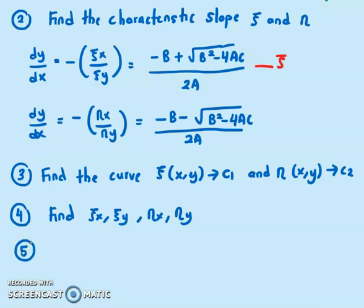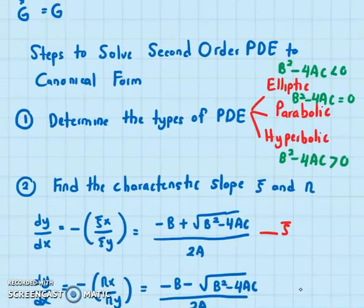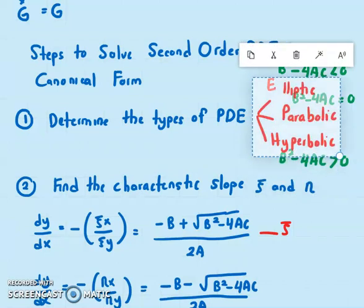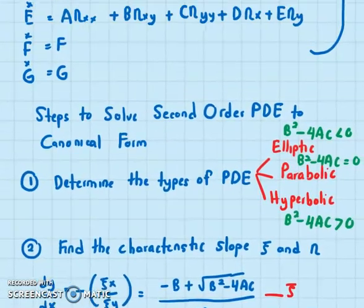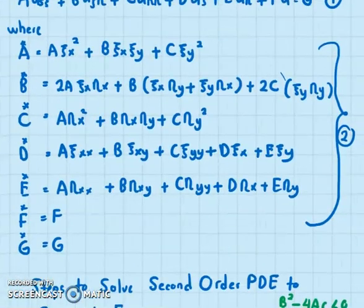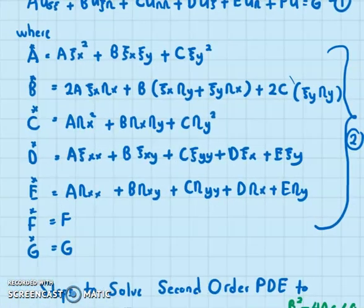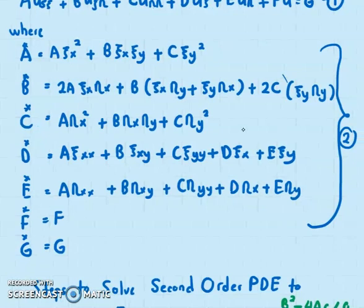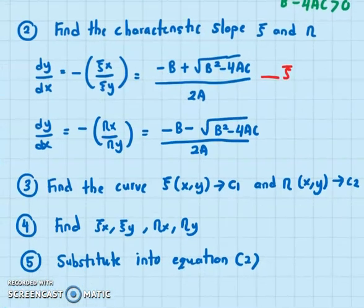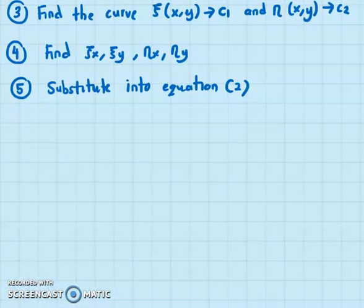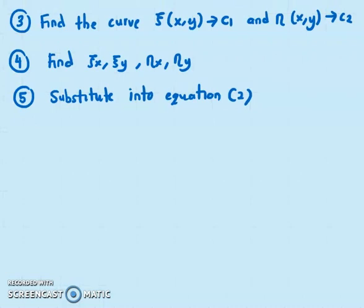Now once you find all this variable, step number 5 is to substitute into equation 2. What is equation 2? Equation 2 is this equation, where we have my A*, B*, C*, D*, E* and so on. So this equation 2. Remember we have found psi_x, psi_y, eta_x, eta_y. Once you have found all this psi value and put it into equation 2, now we will have a simpler form. We have a simpler form where some of the terms will be equal to 0.